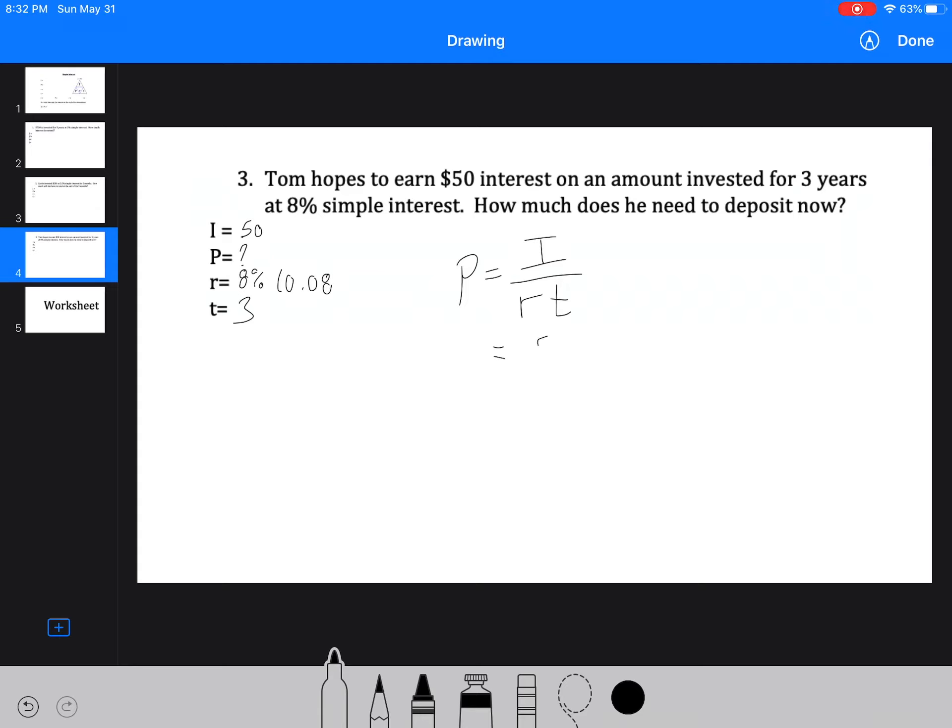So that's P equals I divided by RT. Well, I've got 50 divided by 0.08 times 3. So what that ends up being is I'm going to do it in two steps. And I recommend that some of you do this just because your calculators might mess it up. I'm multiplying the bottom first, and then I'm going to divide. Just make sure that I get it right. So what this means is that he has to invest $208.33. And we put it there for a statement saying that.